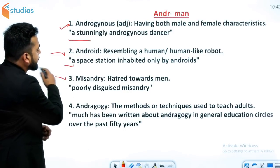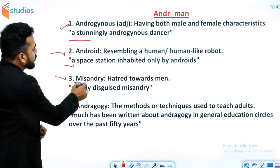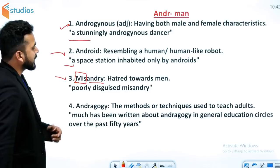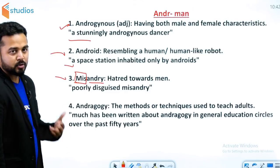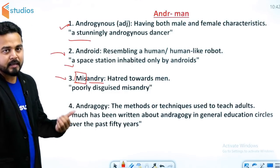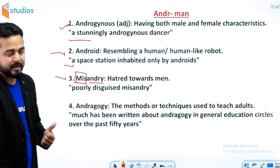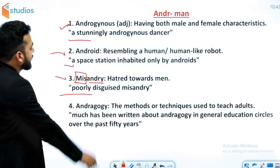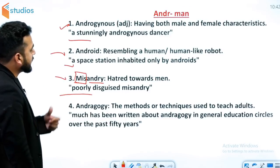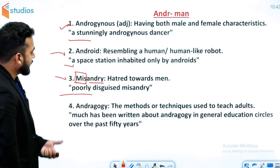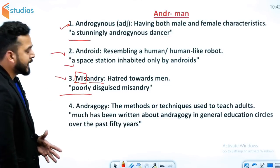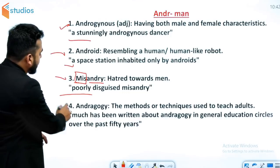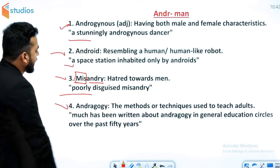तीसरा word है misandry. Mis का मतलब होता है hate करना और andry का मतलब है man — तो hate towards man को हम misandry कहते हैं। Example: poorly disguised misandry.